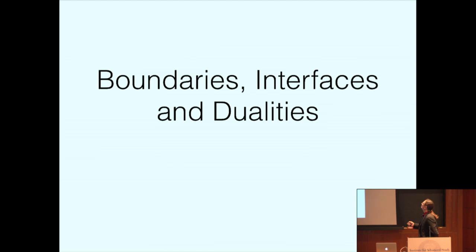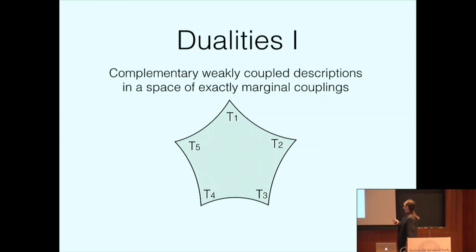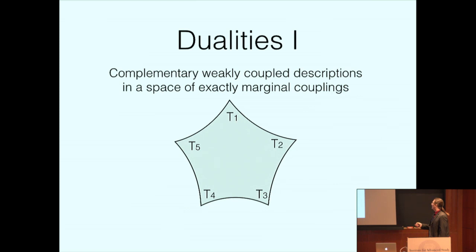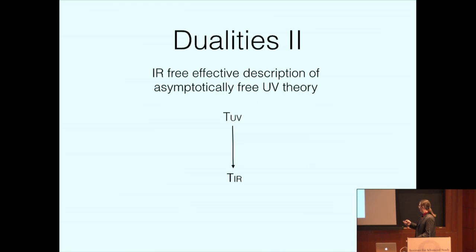As the title says, I'm going to focus on the way dualities interact with interfaces and boundary conditions in quantum field theories. Now there are many things we call dualities. One example is a quantum field theory which has some parameter space of exactly marginal deformations, with distinct weakly coupled descriptions appropriate to different values of the parameters, matched as you move from weak to strong coupling. Other dualities take the form of energy flow.